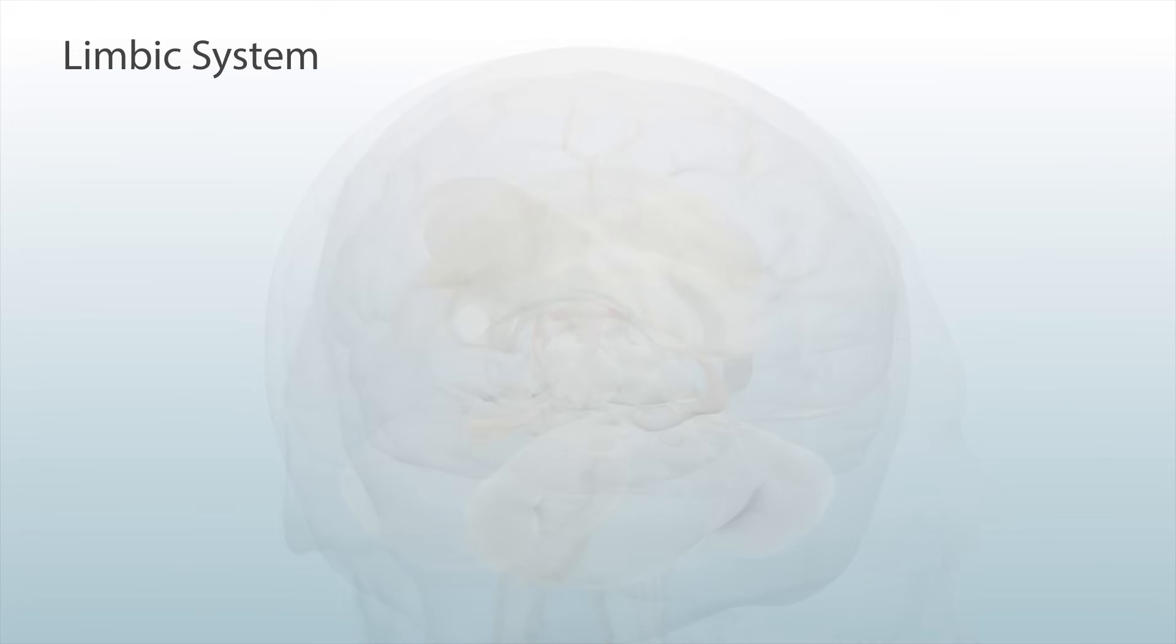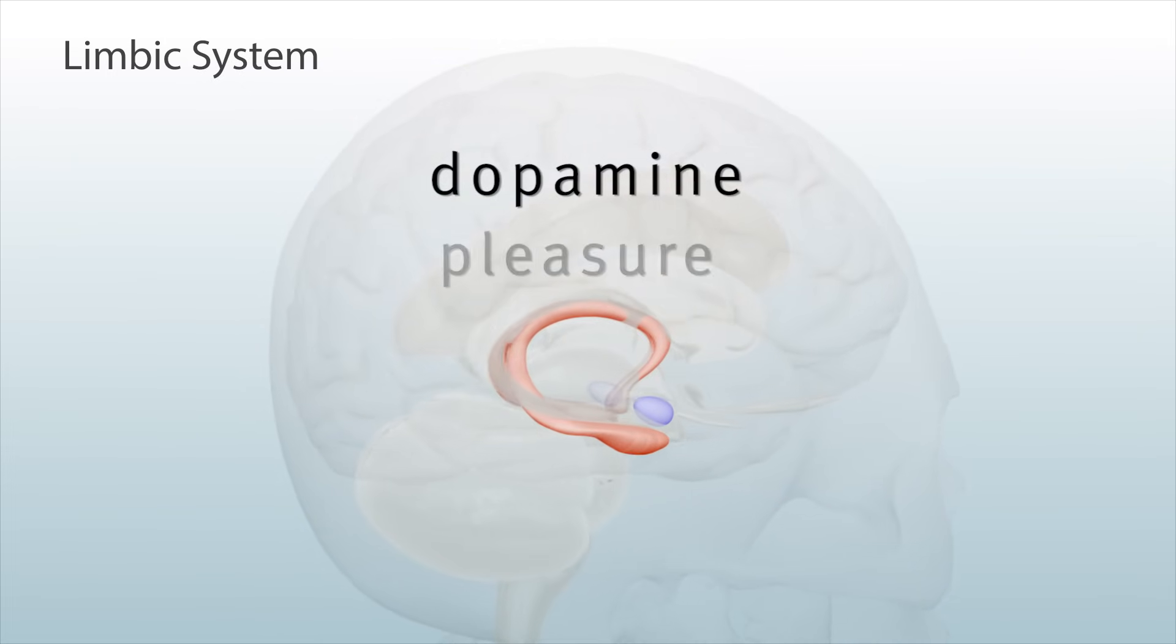The limbic system, a region under the cortex, processes our emotions and drives. It contains the brain's reward circuit, which releases the chemical dopamine, making us feel pleasure.